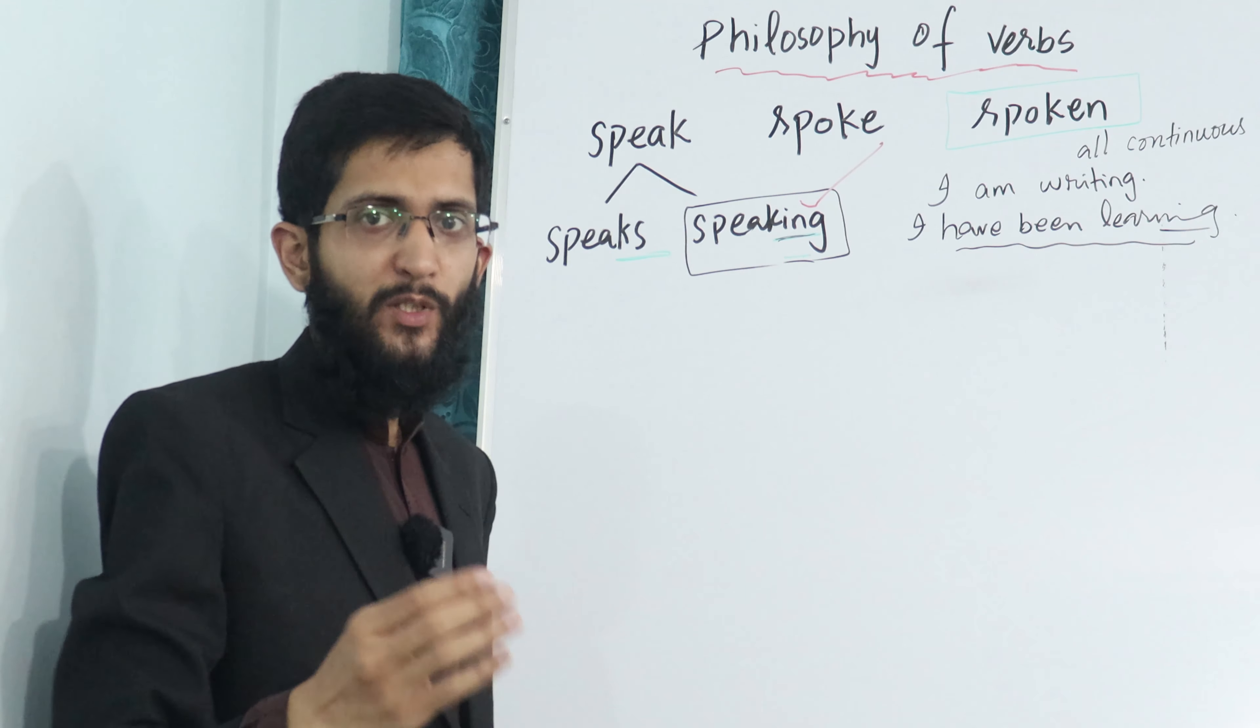Now this first form is used in present simple tense. And sometimes when we have the subject he, she, it, a singular noun phrase or a singular noun, we use S or ES like he goes, she speaks, he learns, he talks, he comes. Otherwise we use simple forms: I come, you come, we come, I go, you go, we all go. This is without S or ES. So the first form is used in present simple tense.